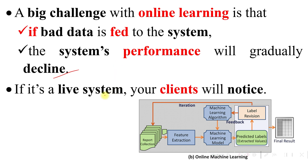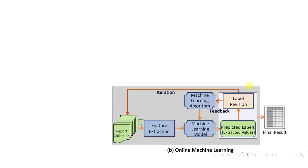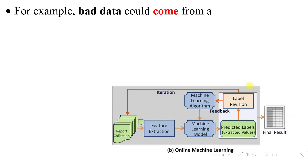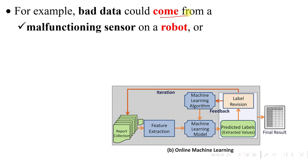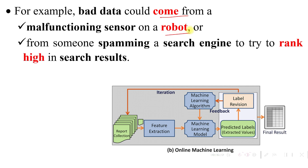If it is a live system, your clients will notice those errors. Bad data could come from a malfunctioning sensor on a robot, or from someone spamming a search engine to try to rank high in search results.